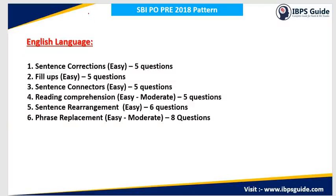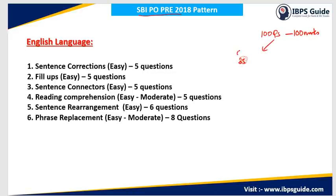Before discussing the type of questions asked in different sections, first I will give you a brief layout of the exam pattern of SBI PO Pre-2018. In the SBI PO Pre-2018 exam, there was a total of 100 questions and total 100 marks were devoted to it. Out of these 100 questions, there were 35 questions from quantitative aptitude.